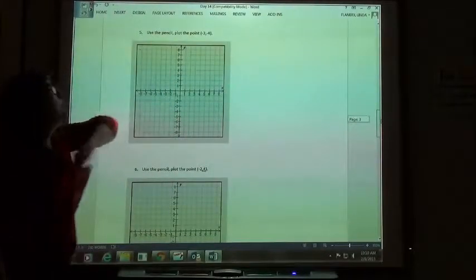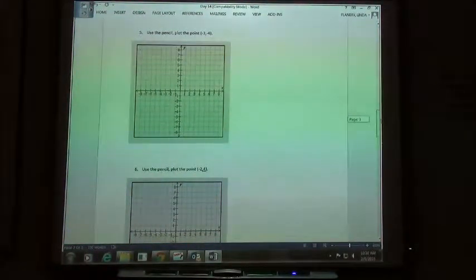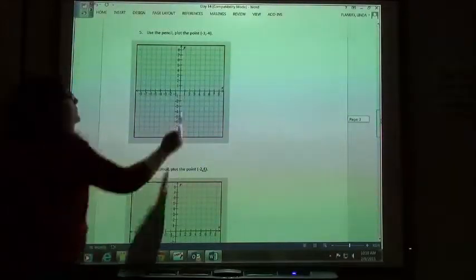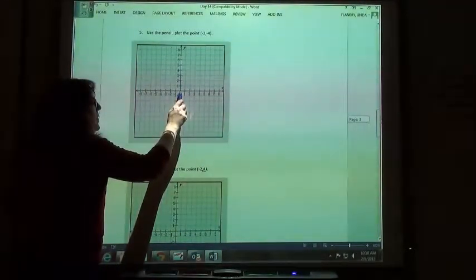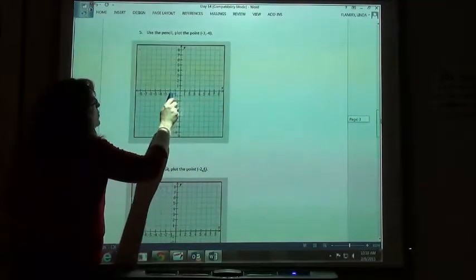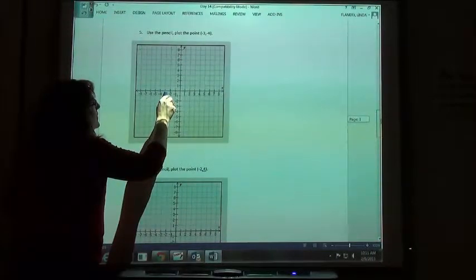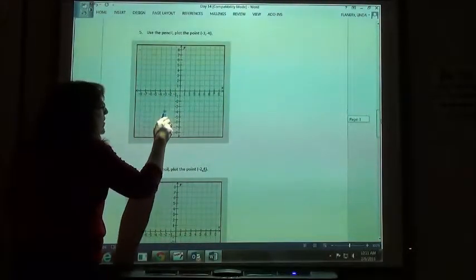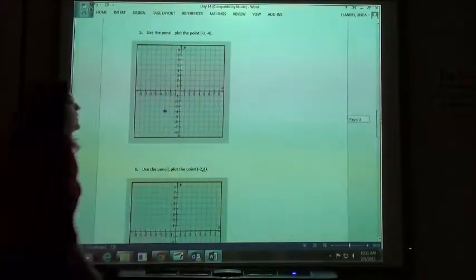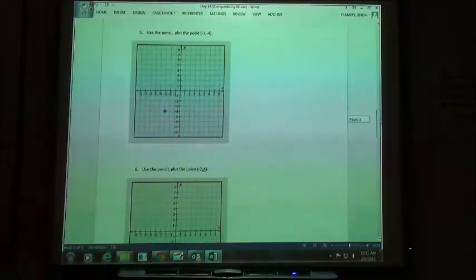Number 5, if I'm going to plot the point negative 3, negative 4, starting at 0, what would I do? Going to negative 3, 3 to the left, 1, 2, 3, and then down 4, 1, 2, 3, 4. There's my dot. I went back to negative 3, down to negative 4, and mark my spot.